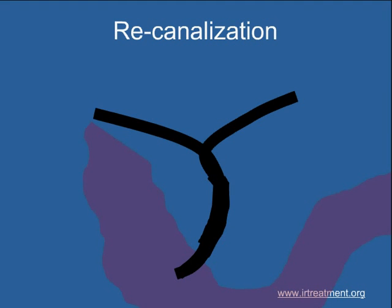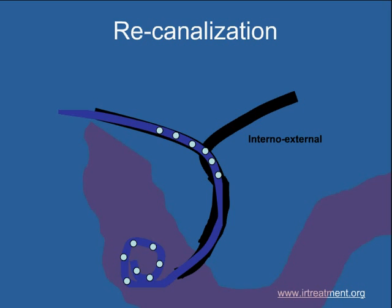At times the procedure is improved further by taking a wire across the blocked segment, and then a tube is placed which has multiple holes, positioned so that there are holes both above and below the block. Very often the distal end of the tube is placed within the intestine, so bile will flow through these holes from the segments above the block into the intestine.